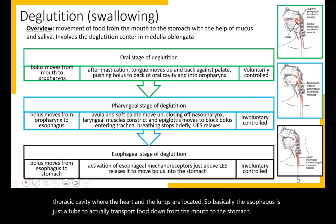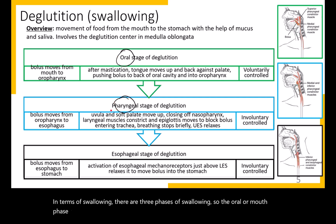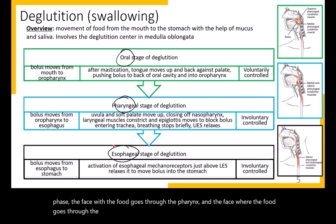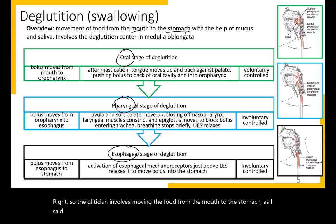In terms of swallowing, there are three phases: the oral or mouth phase, the pharyngeal phase where food goes through the pharynx, and the esophageal phase where food goes through the esophagus. Deglutition moves food from the mouth to the stomach without any chemical or mechanical digestion and without absorption taking place.